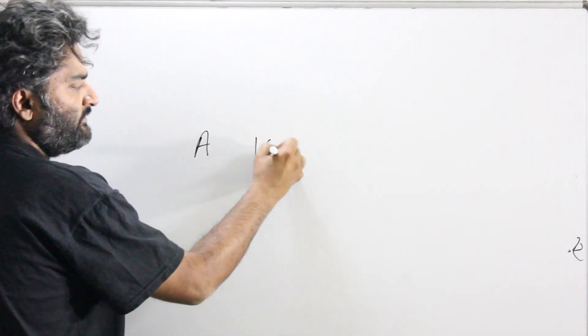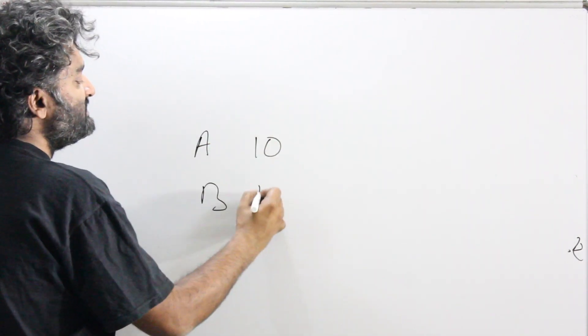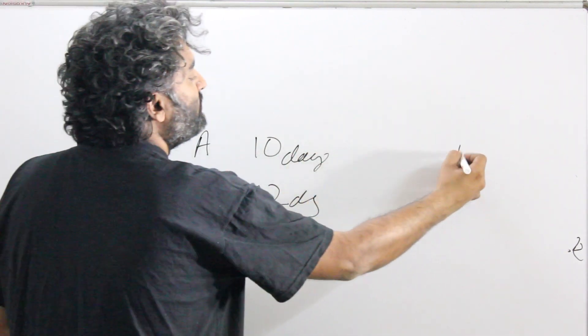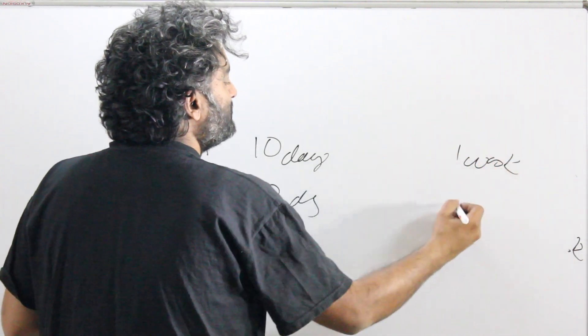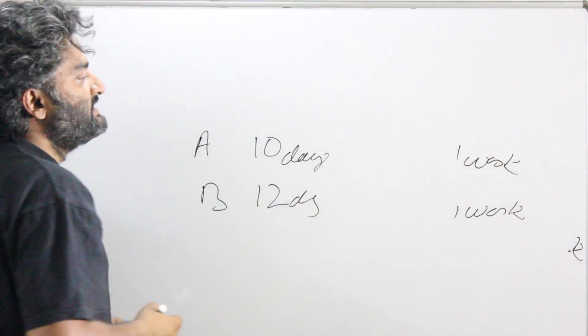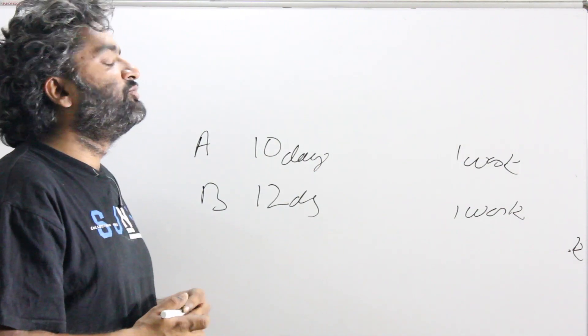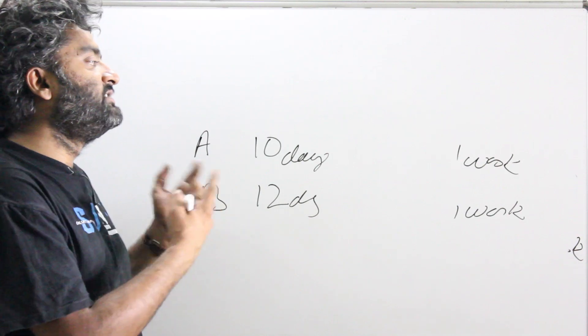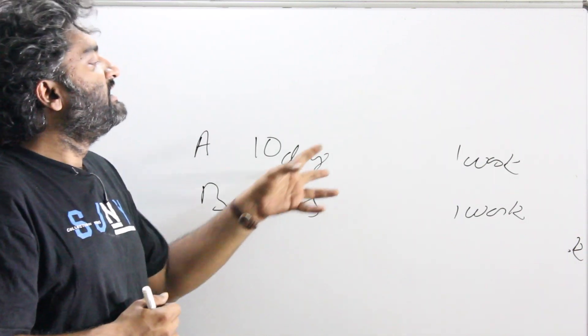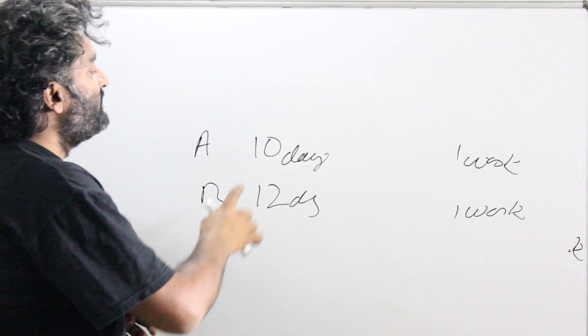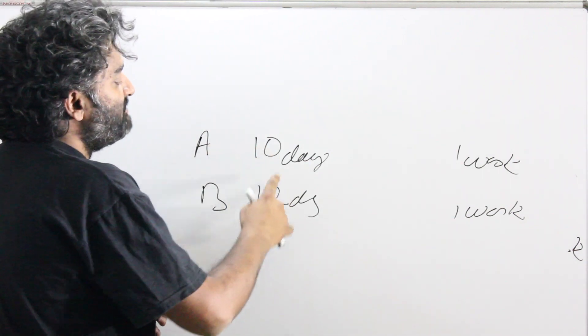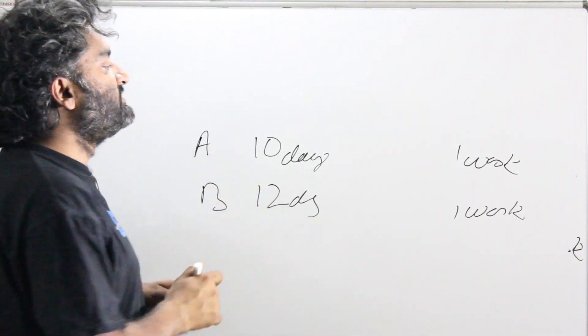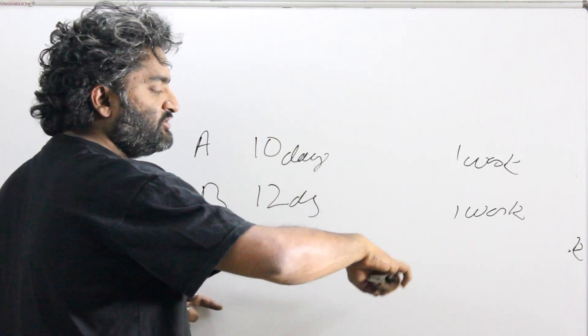Another way of thinking would be, we are using the same concepts here, we are just making lives easy. We know the work was one work, but let's remove that one work and try and put a number here so that our calculations become easier. I know A took 10 days and B took 12 days. A thought jump that I will make right now is let's take the LCM of these two, which you saw in the fraction.